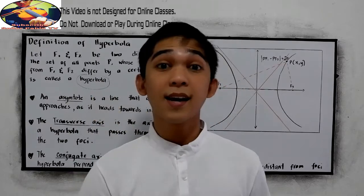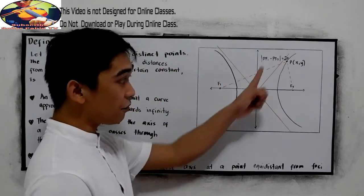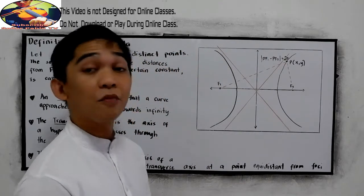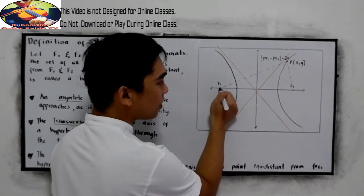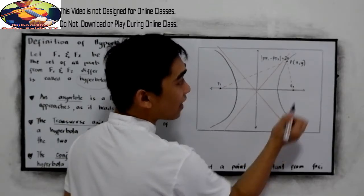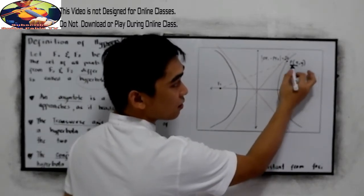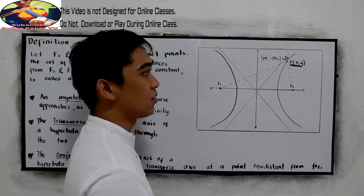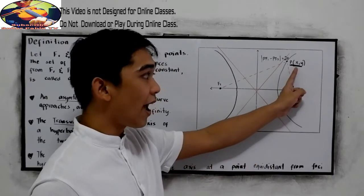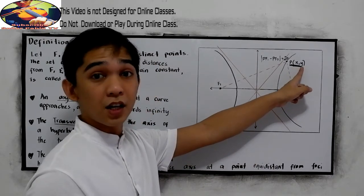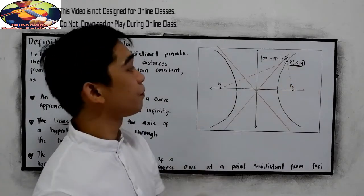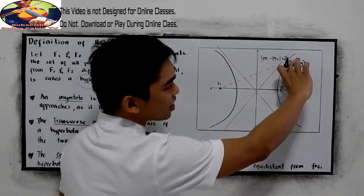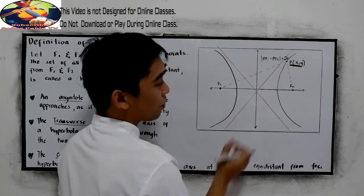So let's say we have here the graph of a hyperbola. This is our f sub 1 and f sub 2. And let's say P is the point. A point consists of an x coordinate and y coordinate, or the abscissa and the ordinate.